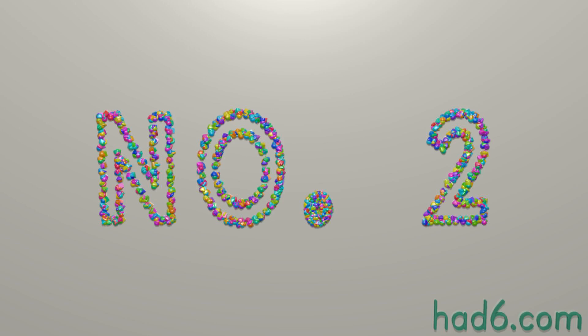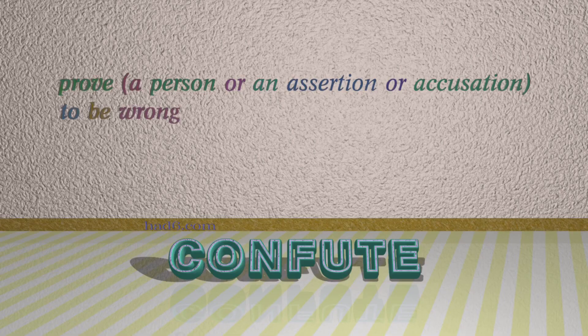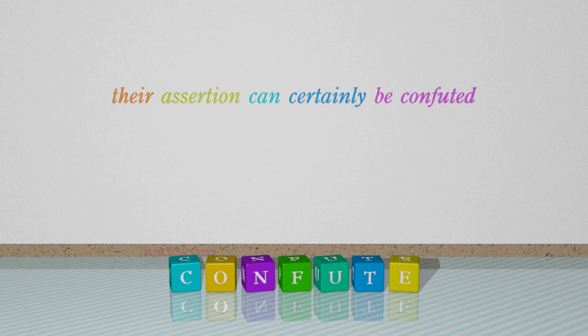Number 2: Confute. Which means: prove a person, or an assertion or accusation, to be wrong. For example: Their assertion can certainly be confuted.